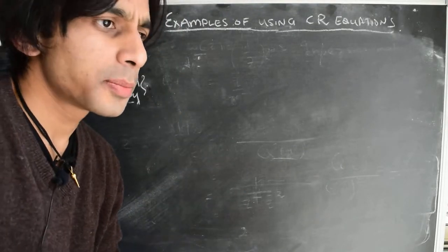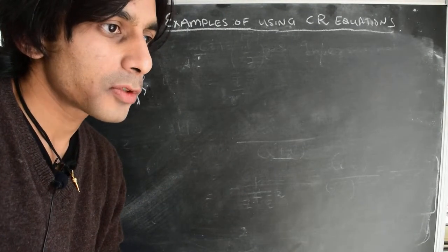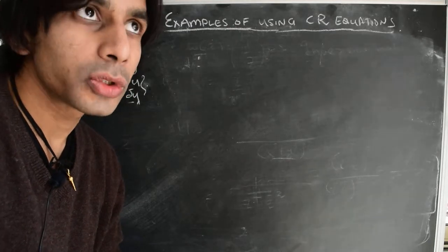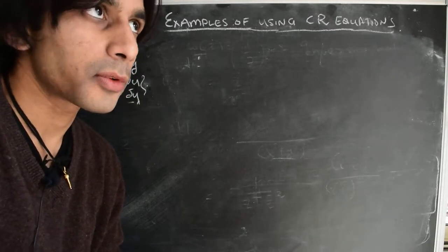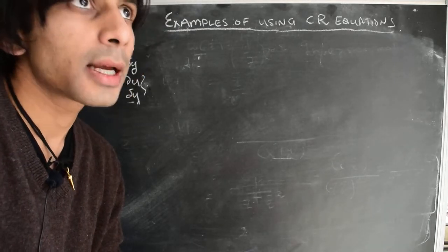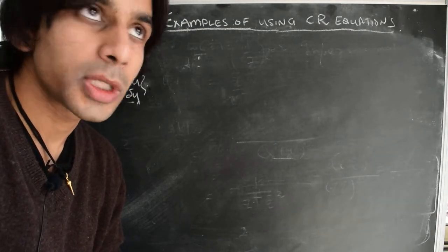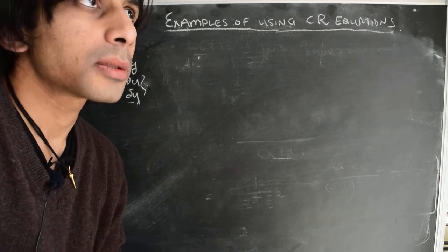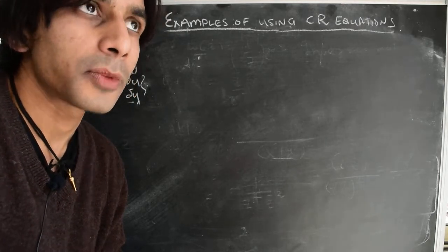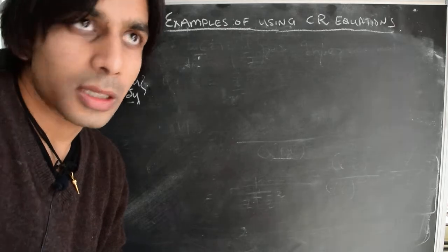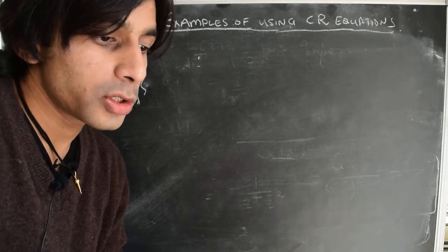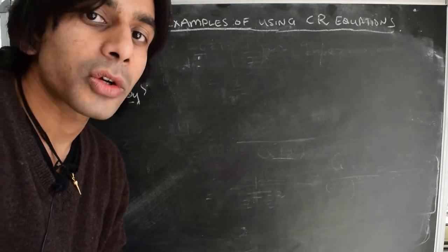In the previous videos we talked about the Cauchy-Riemann conditions and explicitly used the Cauchy-Riemann equations to check a few functions: the identity mapping W = Z, the conjugate W = Z-bar, mappings of the form W = Z^N with the specific case W = Z², and we used the Cauchy-Riemann equations to check whether these functions are analytic or not.